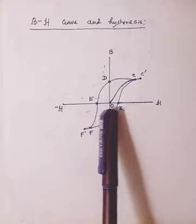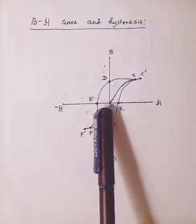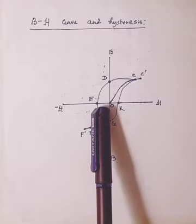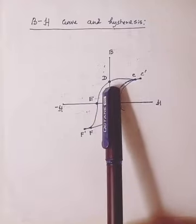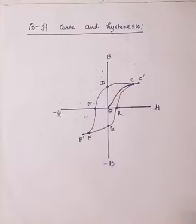Thus OE represents the reversed field which is necessary to destroy completely the residual magnetism, that means OD.